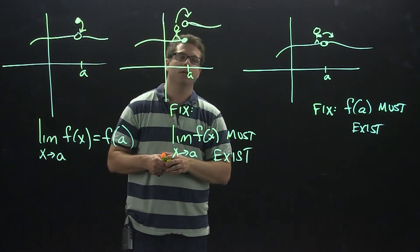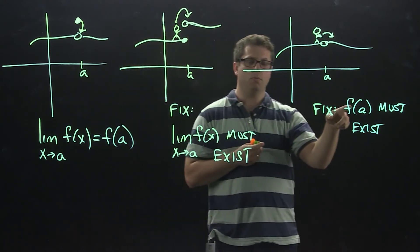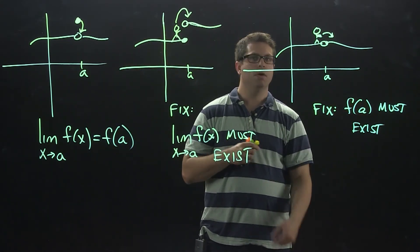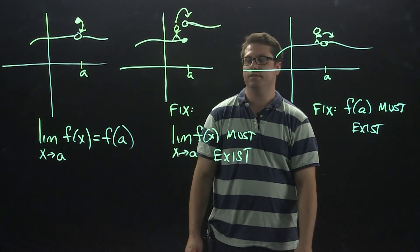What about things like vertical asymptotes? Vertical asymptotes won't even satisfy the first condition because you're not going to exist at that point, which is why I didn't draw it up as one of the three cases here.